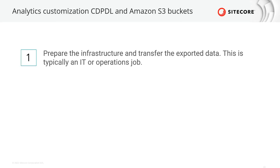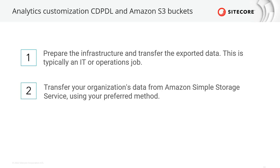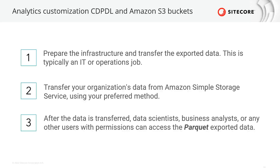To access Sitecore CDP Data Lake export, a Sitecore technical team member must first enable the export services for your organization's Sitecore CDP tenant. Sitecore CDP enables you to transfer all your organization's data from Amazon Simple Storage Service — Amazon S3 — to another Amazon S3 bucket, or to your organization's on-premises environment using your own preferred method. After the data is transferred, a data scientist, business analyst, or any other user with permissions can access the exported data. The exported files are of the parquet file type, which can be easily loaded into databases and analytics models. Full documentation on this process can be found on doc.sitecore.com.